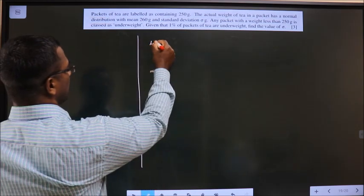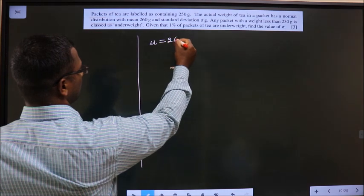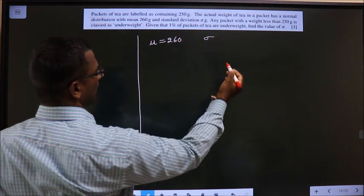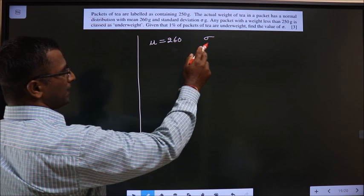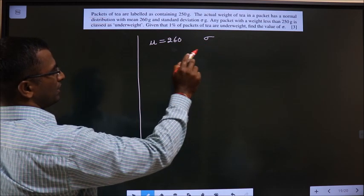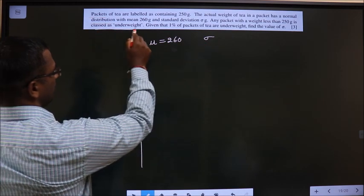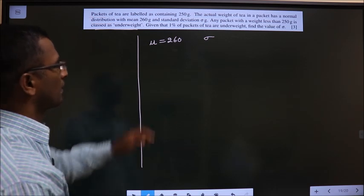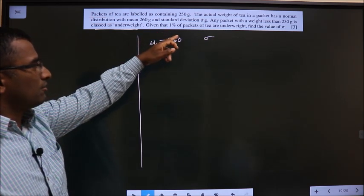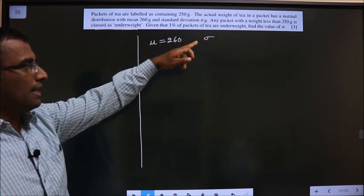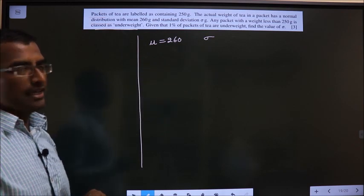So mean is 260. Standard deviation is not given. Any packet with a weight less than 250 grams is classified as underweight. Given that 1% of packets of tea are underweight, find the value of standard deviation.